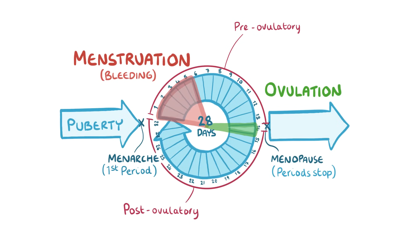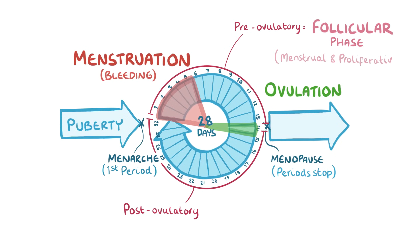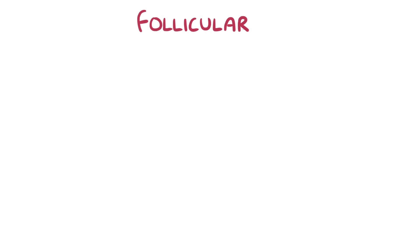During these two phases, the ovaries and the endometrium each undergo their own set of changes, which are separate but related. For the ovary, the two weeks leading up to ovulation is called the ovarian follicular phase, and this corresponds to the menstrual and proliferative phases of the endometrium. Similarly, the two weeks following ovulation is referred to as the ovarian luteal phase, which corresponds to the secretory phase of the endometrium. So let's first focus on the pre-ovulatory period, starting with the ovarian follicular phase.